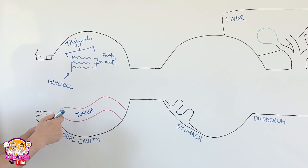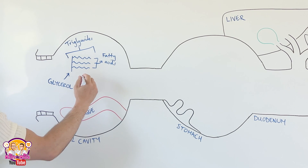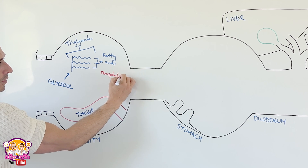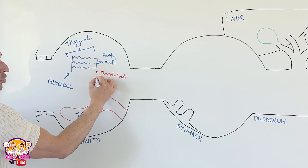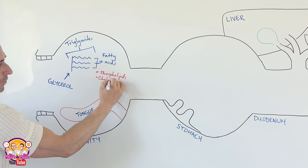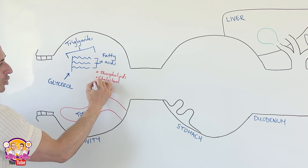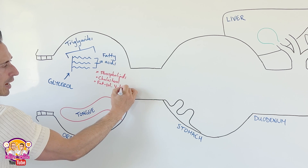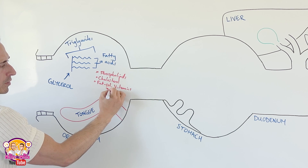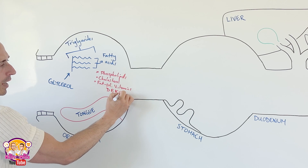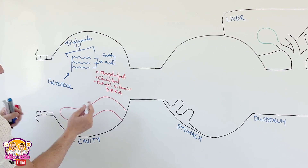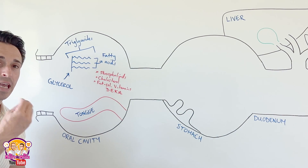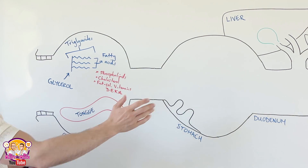But we're not only ingesting triglycerides. We also ingest phospholipids, cholesterol, and fat-soluble vitamins. Remember the fat-soluble vitamins with the mnemonic DEKA: vitamin D, vitamin E, vitamin K, vitamin A. So these are all the important fat-soluble things that we can ingest and eat that need to undergo this particular process.